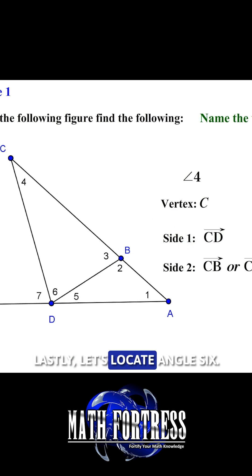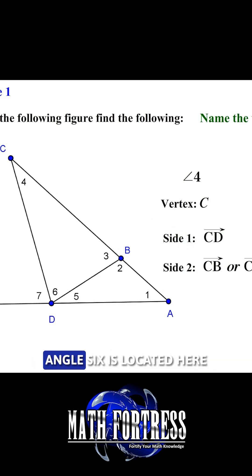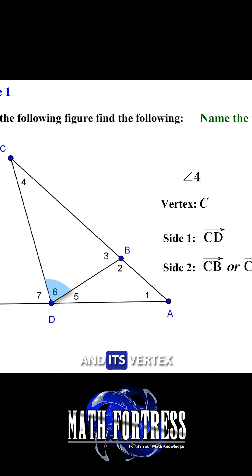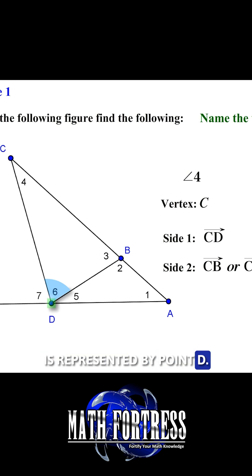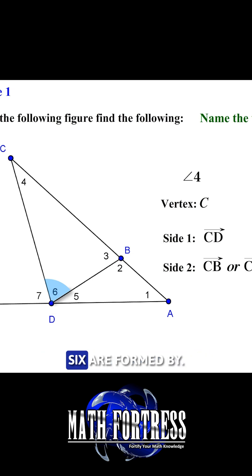Lastly, let's locate angle 6. Angle 6 is located here and its vertex is represented by point D. The sides of angle 6 are formed by...